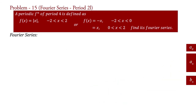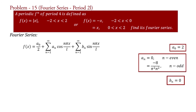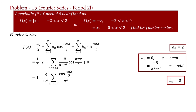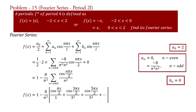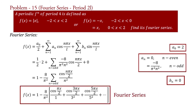The Fourier series for period 2L is: substituting the coefficient values with L = 2, f(x) = 1 + (a_0/2) + summation over odd n of (−8/(π²n²)) cos(nπx/2). Taking −8/π² outside the summation: f(x) = 1 − (8/π²) · Σ [cos(nπx/2) / n²] for n = 1, 3, 5, ... Expanding: f(x) = 1 − (8/π²)[cos(πx/2)/1 + cos(3πx/2)/9 + cos(5πx/2)/25 + ...]. This is the required Fourier series of the function.